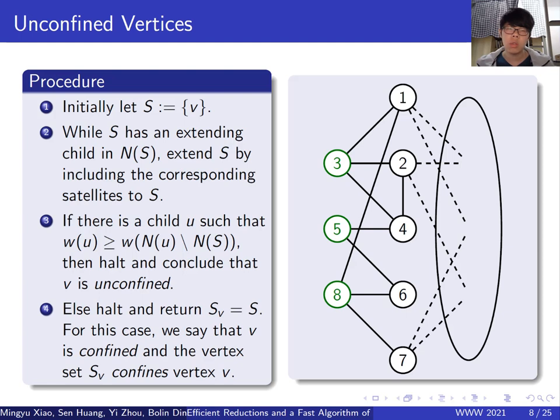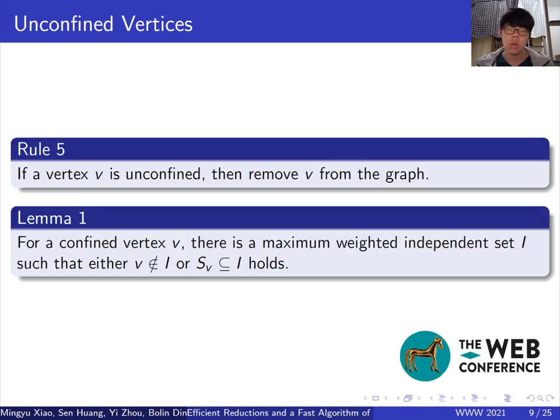We use the following procedure to check whether a vertex is unconfined or find the confining set if not. A neighbor of S is called child if it satisfies the condition in step 3. And if the set of N(u) minus N(S) equals 1, then it can be called extending. And the only vertex in the set is called satellite. By the procedure, we get Rule 5.